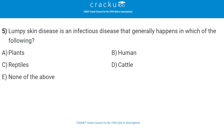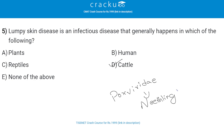Next, lumpy skin disease is an infectious disease that generally happens in which of the following? The correct answer is cattle, that is option D. Lumpy skin disease is caused by a virus of the family Poxviridae, also known as Neethling virus.